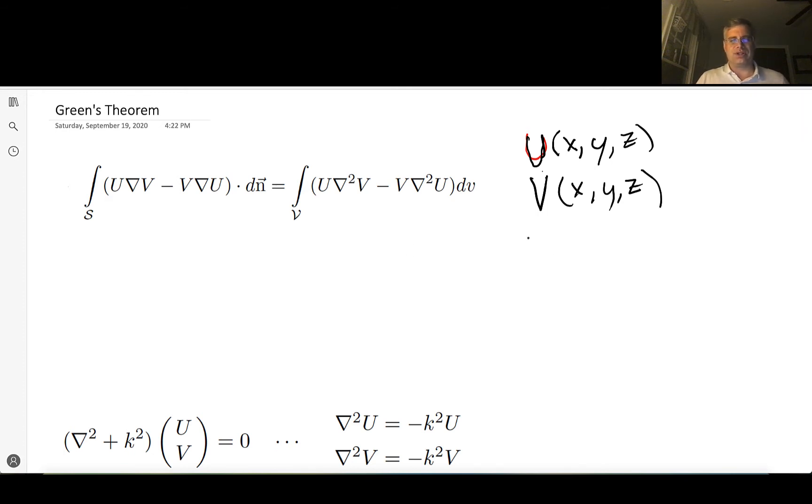And recall, of course, that my del operator, I'll just write it here for posterity, the partial derivative with respect to x, stick it on the x, partial derivative with respect to y, stick it on the y, partial derivative with respect to z, and stick it on the z. Now, when we go over here, we have this relationship here, u times the gradient of v. So of course, this is going to give you a vector, u is a scalar.